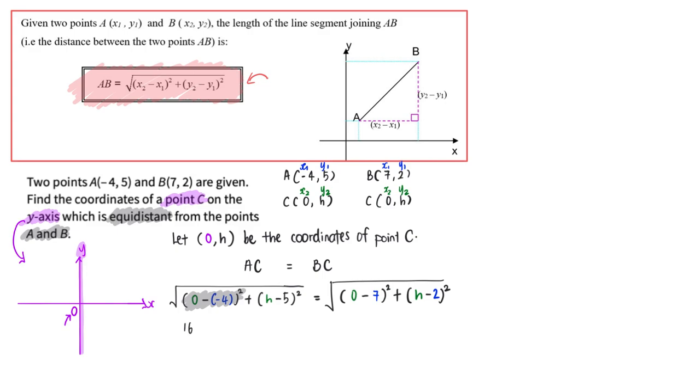I'm going to expand and simplify this to give me h square minus 2 times h times 5 plus 5 square. Again, replicating this will give me a value of 49. And this will give me, after I expand and simplify using the special algebraic product, h square plus, oh sorry, should be minus 2 times h times 2 plus 2 square.